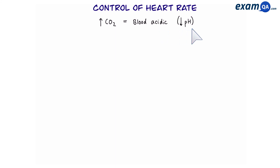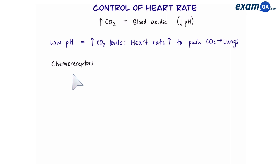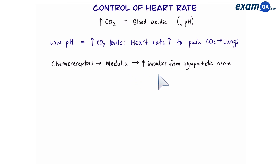Let's have a look at an example. If the amount of carbon dioxide in the blood increases, this makes the blood more acidic and as a result reduces the pH. If we have low pH because of high carbon dioxide levels, that means the heart rate needs to increase to push carbon dioxide to the lungs, and this should increase the pH back to normal. The chemoreceptors detect the low pH in the blood, send this message to the medulla, and from the medulla more impulses will be sent via the sympathetic neuron to the SAN, and as a result the heart rate will increase.